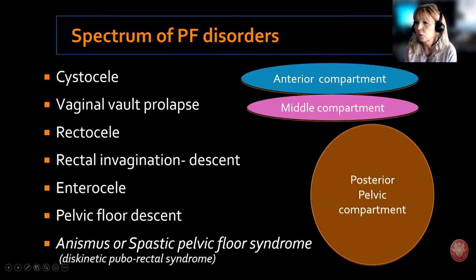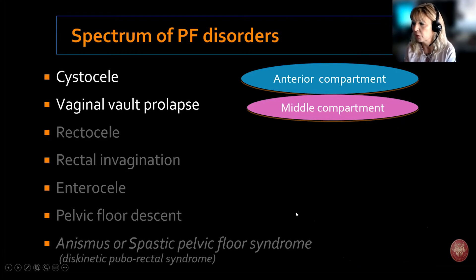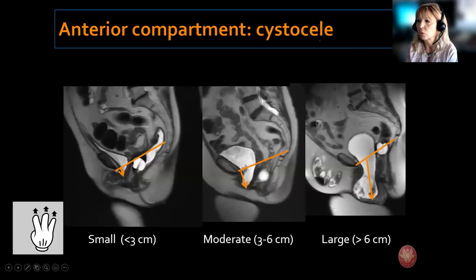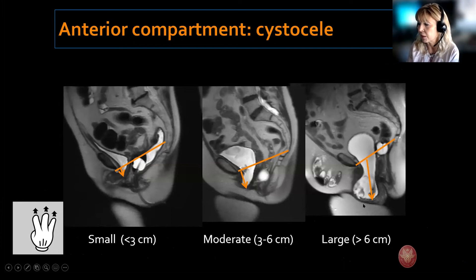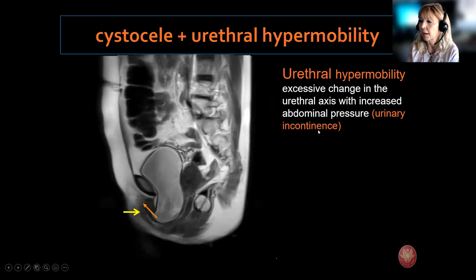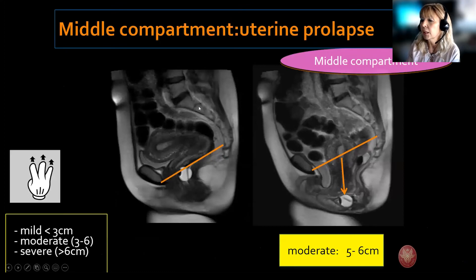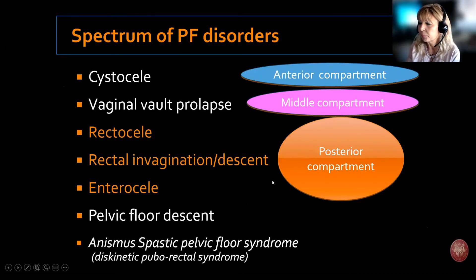I will spend a moment on anterior and middle compartment disorders before focusing on the posterior pelvic floor. Cystocele, which is an anterior pelvic floor disorder, is very easily displayed and graded with MRI — small, moderate, and severe — as well as urethral hypermobility. Similarly, uterine prolapse is very nicely displayed on MRI images.